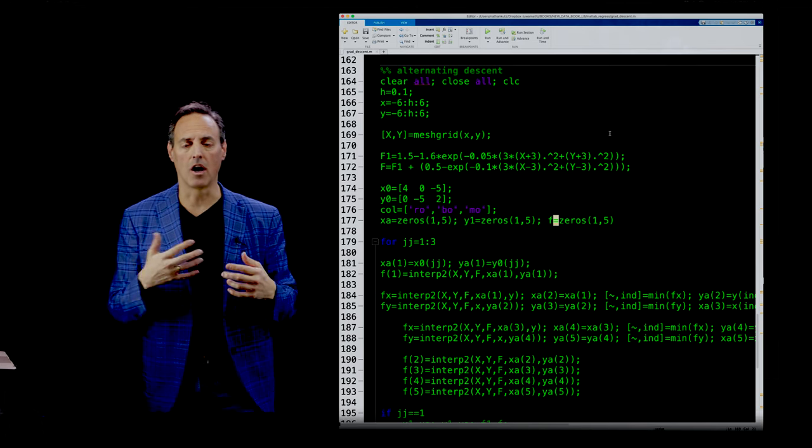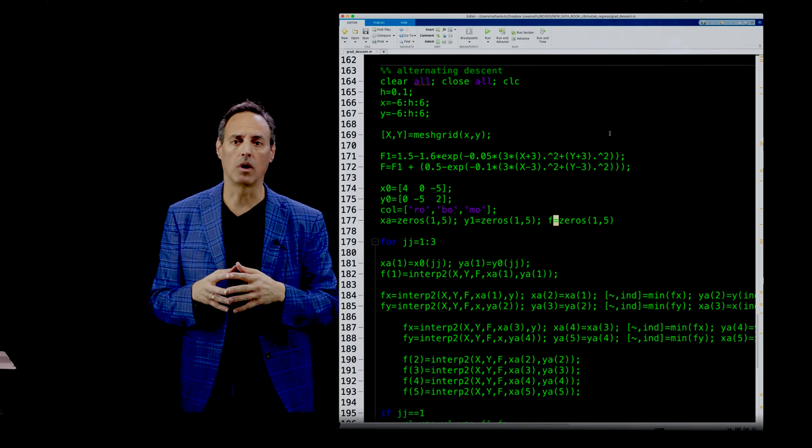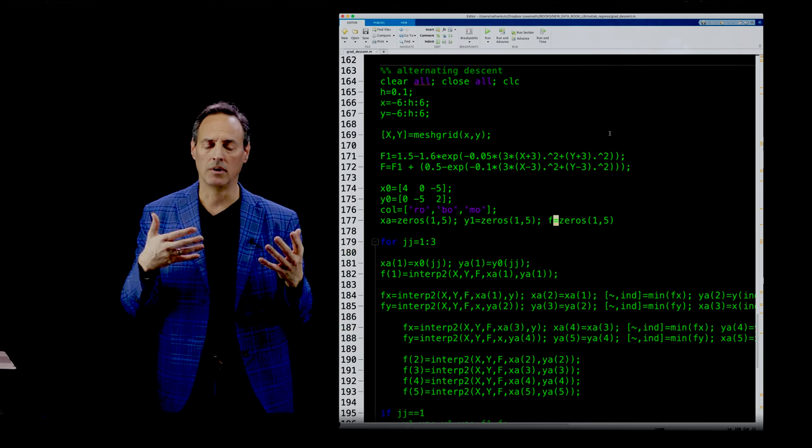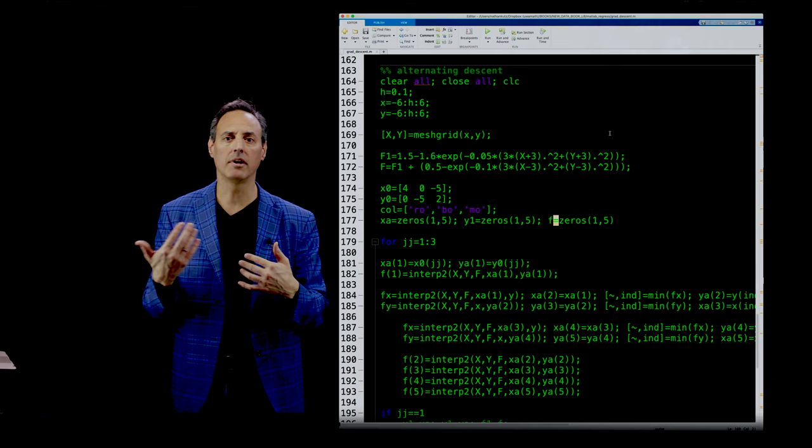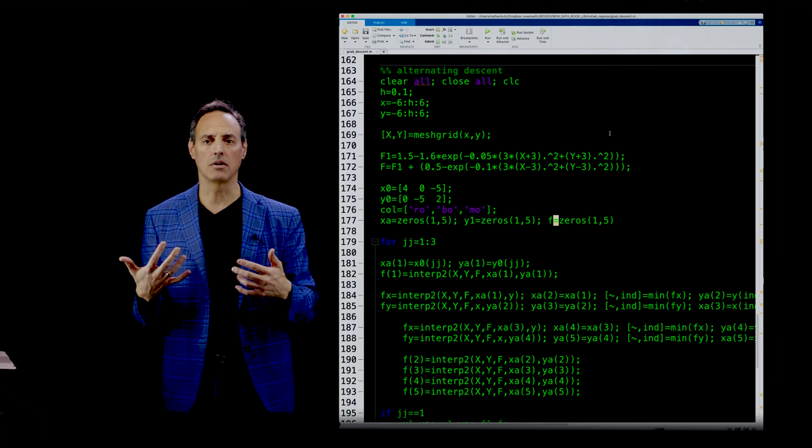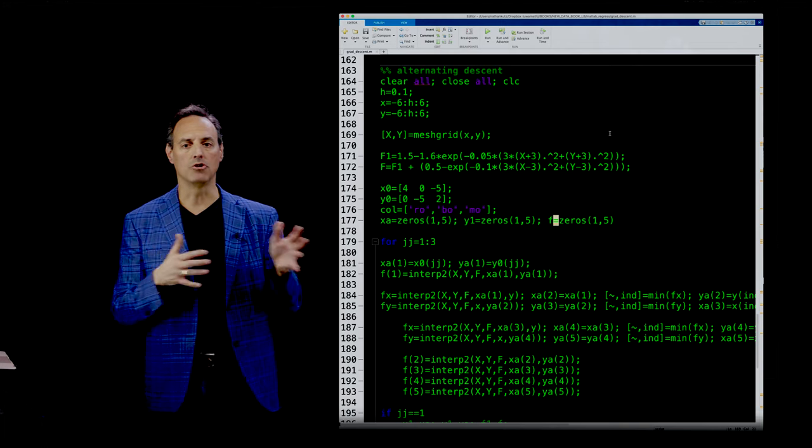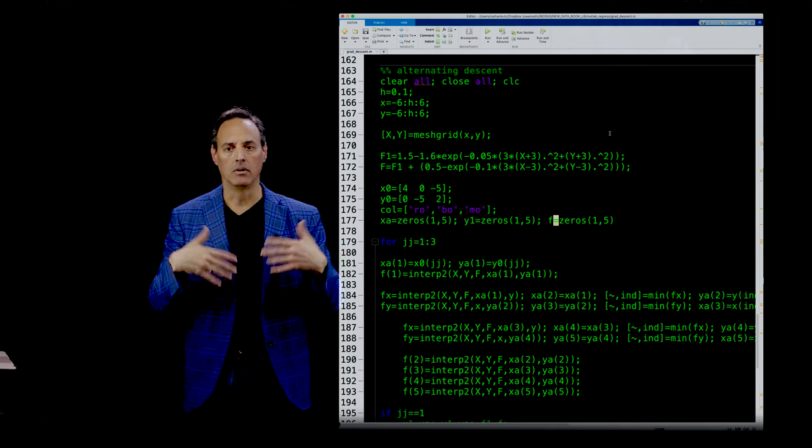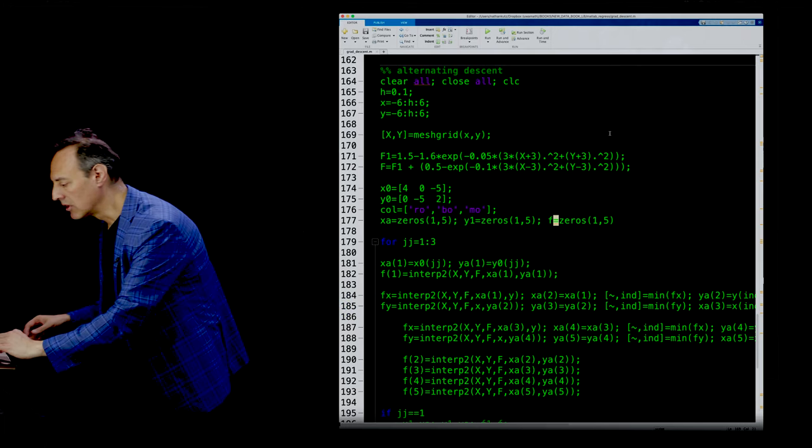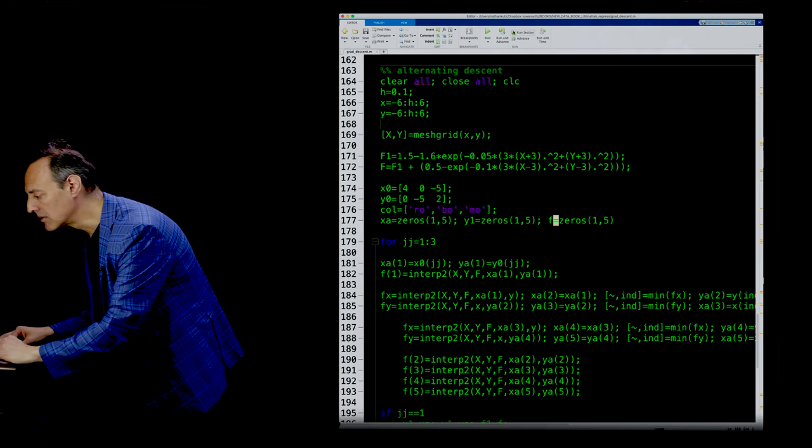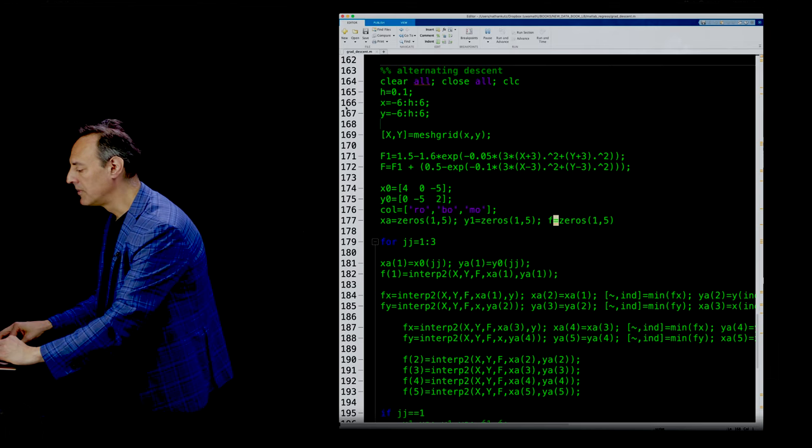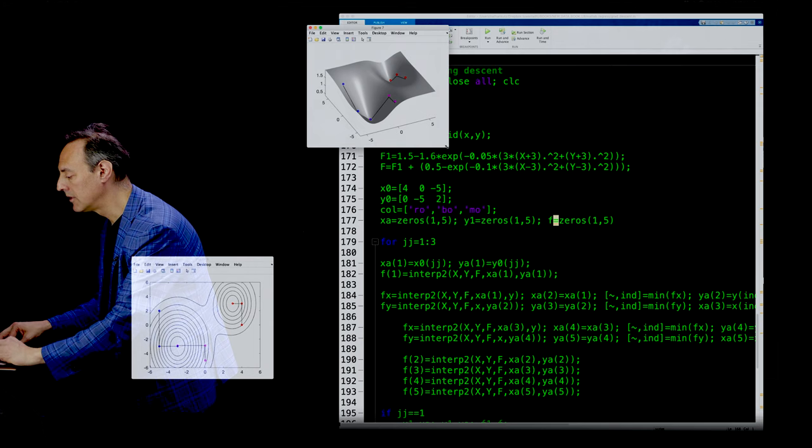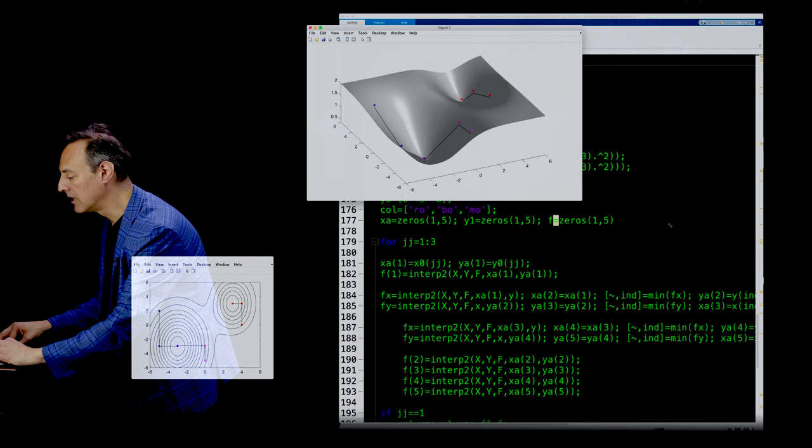Alternating optimization methods are common and used widely across engineering, physical, and biological sciences, partly because it's easy. You only have to optimize over one variable at a time, and typically that's not so hard to do. The hope is that as you do that, you reach the global minima after a certain number of iterations. Let me show you what this gives. In this case, it does an amazing job in finding the minima.